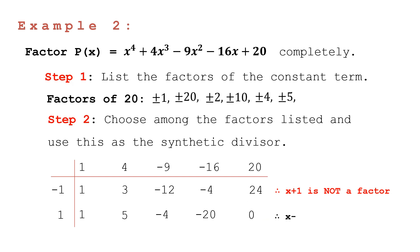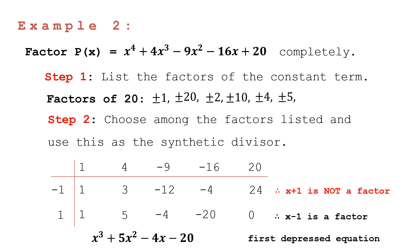The remainder is 0, therefore x minus 1 is a factor. Now that we have the first factor, we write the quotient as the first depressed equation. With the exponent one less than the original, we get x³ plus 5x² minus 4x minus 20 as our first depressed equation.